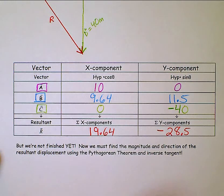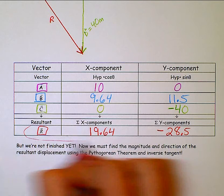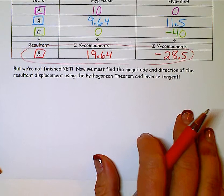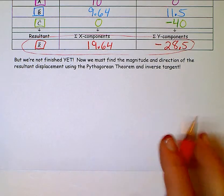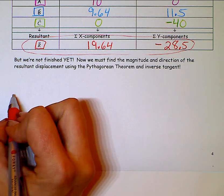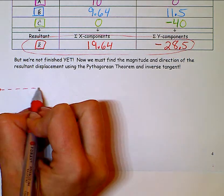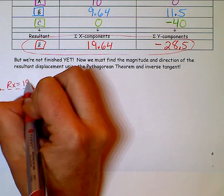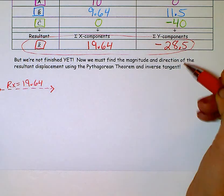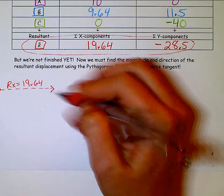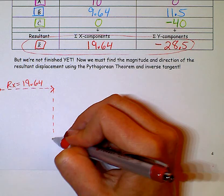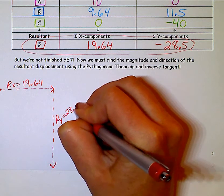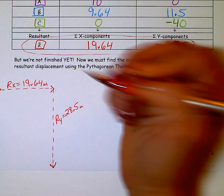Once I get to this part, just redraw your R triangle, your answer. And solve with the Pythagorean theorem and inverse tangent. So I'm going to redraw my R vector. It goes 19.64 this way. And the y is going to go down 28.5.